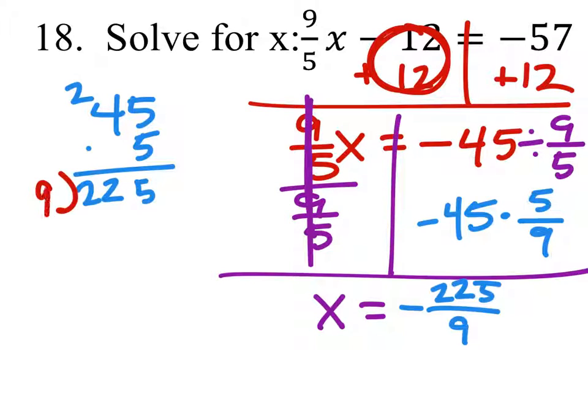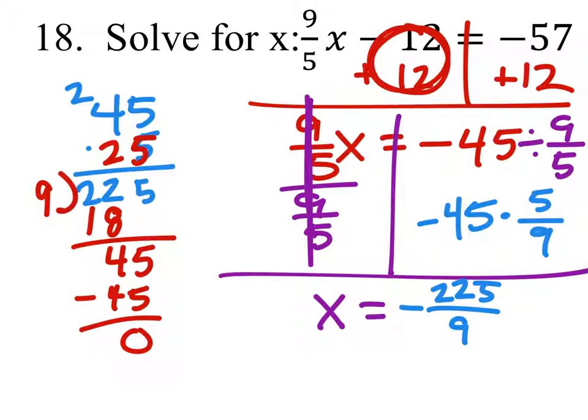So, 225 divided by 9, that would be 2, 2 times 9 is 18, we've got 45, that's a 5, and we'll subtract 45, 0 remaining.